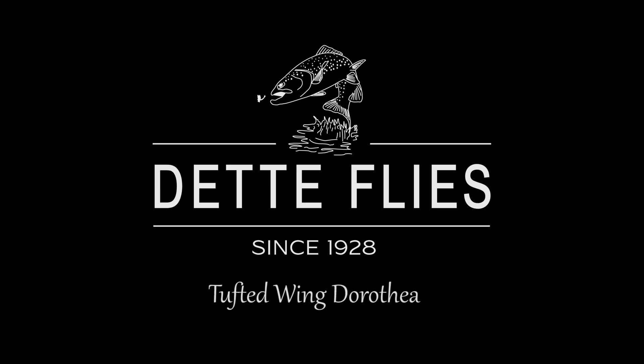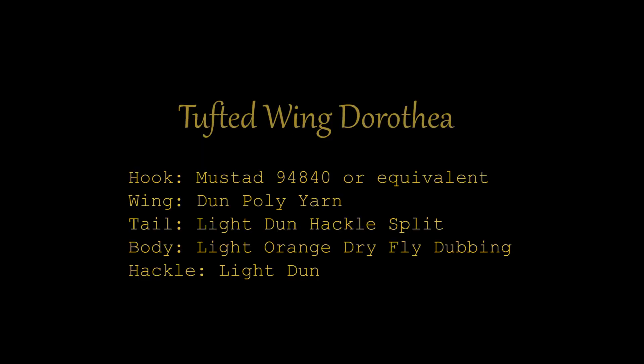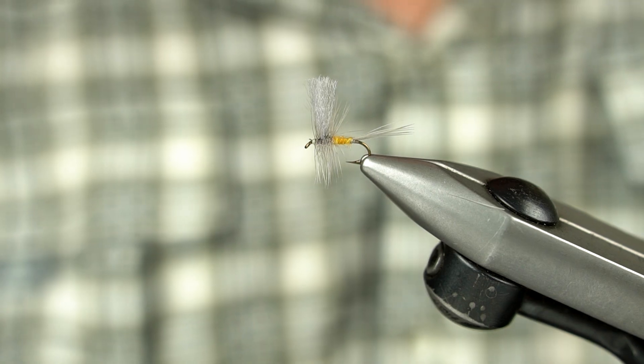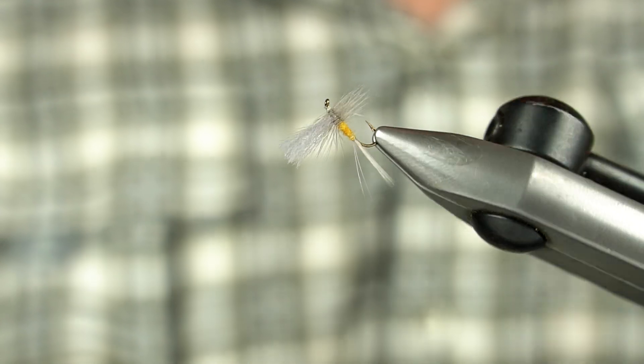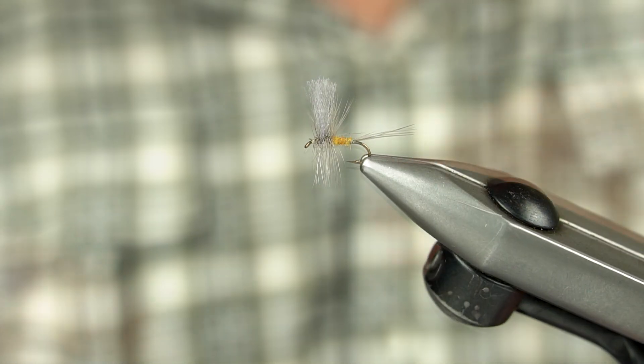Today we are going to be tying a tuft wing darthea. This variant uses poly yarn for the wing, but other materials are a fine substitute such as turkey flats or CDC. It is also adaptable to almost any hatch.